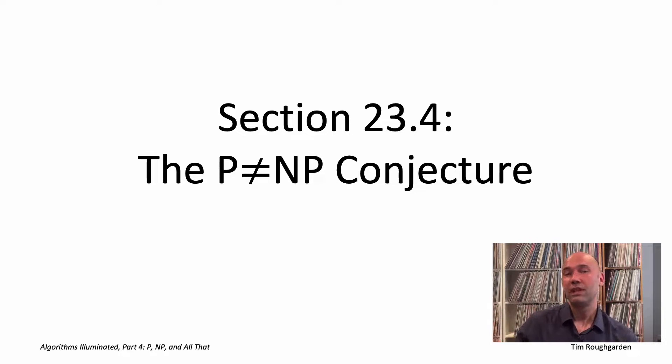Way back in the fourth video of this playlist, we gave an informal definition of the P not equal to NP conjecture. We said that it basically means checking someone's work, checking an alleged solution to a computational task, can be fundamentally easier than coming up with your own solution from scratch. We are now finally in a position to define that conjecture formally.